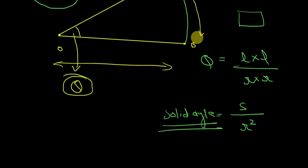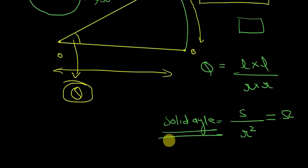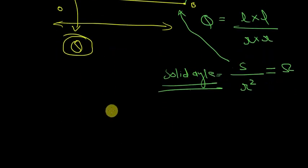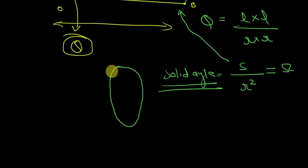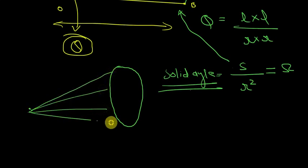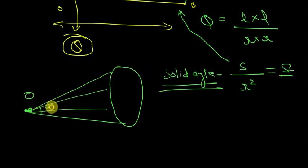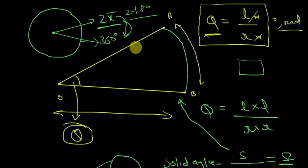The solid angle is represented by omega. What does this formula physically mean? Let's take a surface and join all its points to a single point O. We say that the surface subtends a solid angle omega at that point — and that is known as the solid angle.